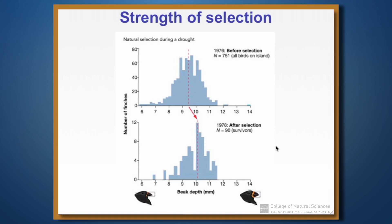We can see this in a frequency distribution before selection of beak depths. The average was somewhere around 9.5 millimeters. Then after selection in 1978, when only 90 of 751 birds ended up surviving, there was a shift in beak depth to slightly greater than 10 millimeters. This might not seem like a big difference — just half a millimeter — but it turns out that for cracking open the large, very hard seeds that were all that remained after the drought, that increased beak depth was very important to survivorship.